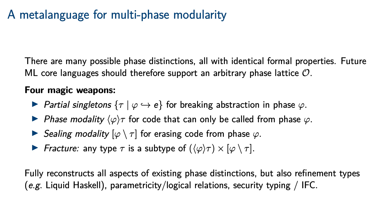The phase distinction between compilation and programming is but one of many possible phase distinctions, all of which have identical formal properties. Therefore, we advocate future-proofing ML core languages by indexing them in an arbitrary phase lattice O. There is type structure that corresponds to this phase lattice. First, we have partial singletons for breaking abstraction in a given phase. Then, we have a phase modality for code that only exists in a given phase. We also have a ceiling modality for erasing code from a given phase — this generalizes the way that sealed modules in Standard ML do not have any static component. Finally, one must impose a correctness condition governing the interaction between these modalities, called fracture: any type tau can be reconstructed as a subtype of the product of its phase modality with its ceiling modality. This language reconstructs all semantic aspects of existing phase distinctions, as well as refinement types as found in Liquid Haskell, parametricity and logical relations, and even security typing or information flow control.